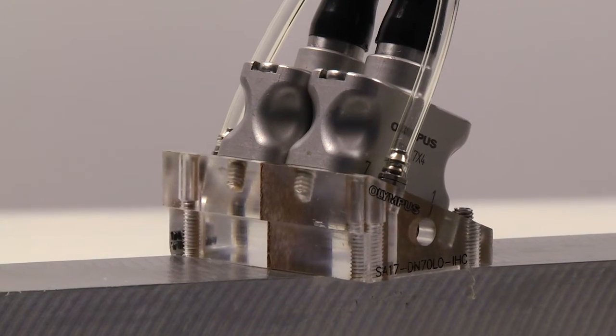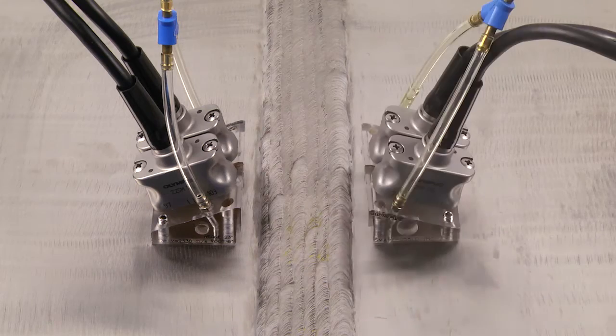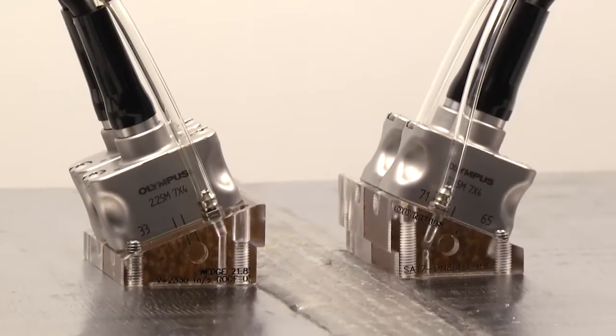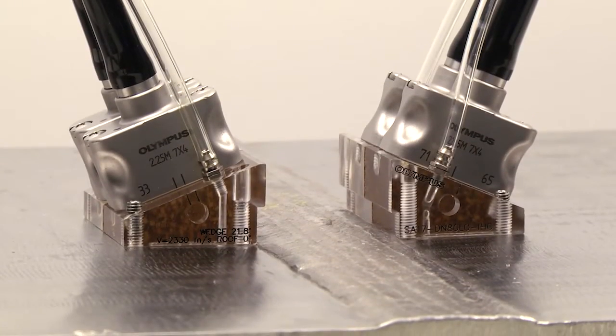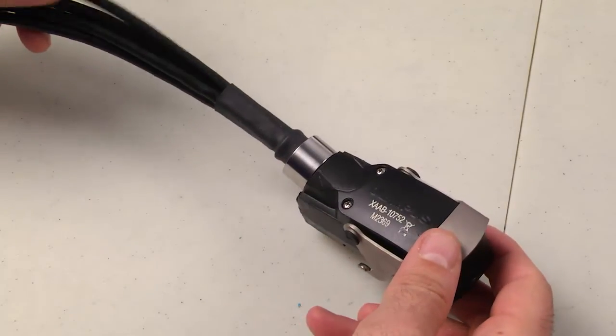DMA probes are purchased in either a dual configuration for single-sided inspection or quad configuration for two-sided simultaneous inspection with all arrays wired into the same connector, eliminating the need for a splitter.